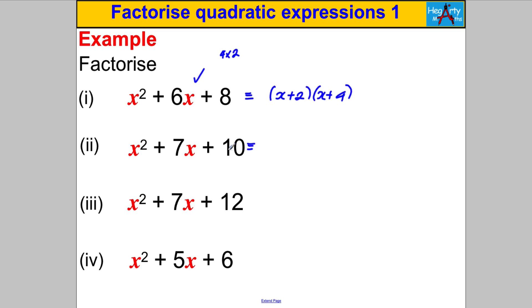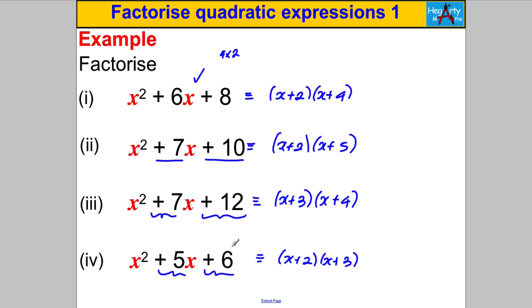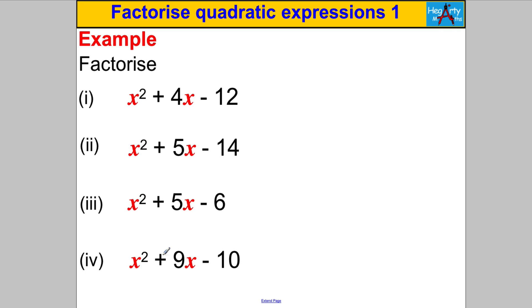Next: two numbers with product +10 and sum +7 — that's 2 and 5, giving (X + 2)(X + 5). Product +12 and sum +7: that's 3 and 4, giving (X + 3)(X + 4), since 3 × 4 = 12 and 3 + 4 = 7. Last: product +6 and sum +5 — that's 2 and 3, giving (X + 2)(X + 3). Done.